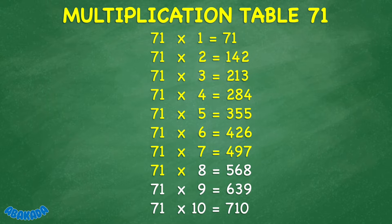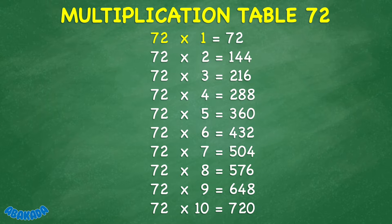71 times 8 equals 568. 71 times 9 equals 639. 71 times 10 equals 710. 72 times 1 equals 72. 72 times 2 equals 144. 72 times 3 equals 216. 72 times 4 equals 288. 72 times 5 equals 360.